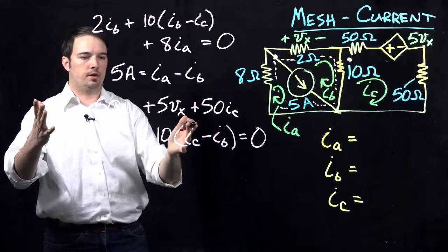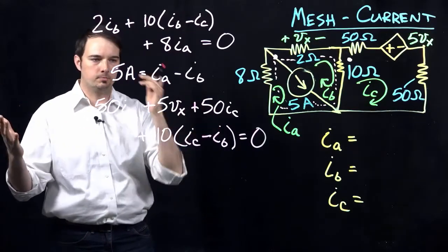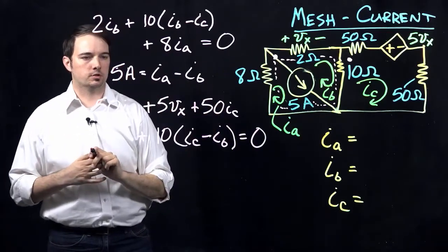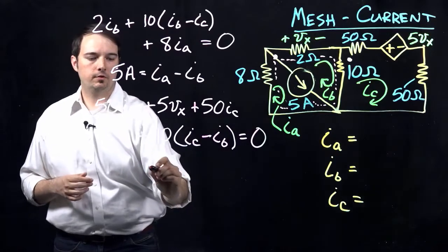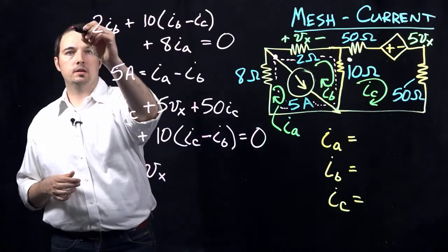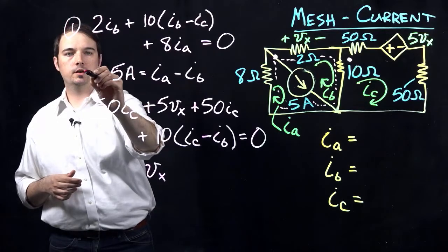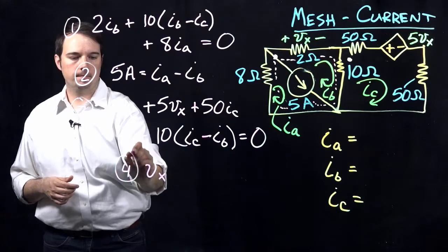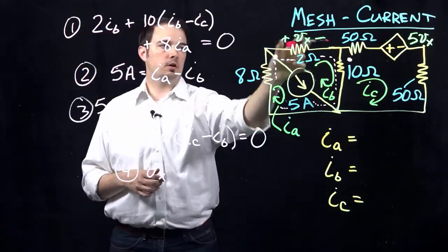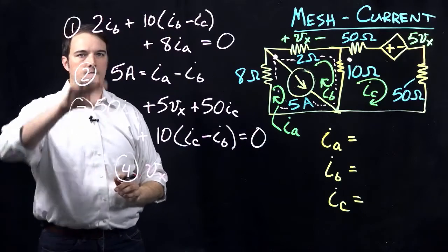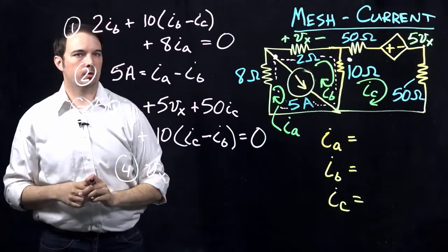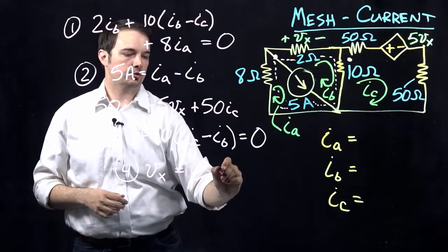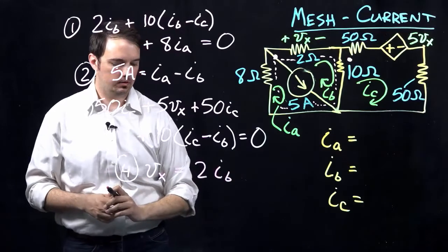I have a third equation, but now we've introduced a fourth variable due to this dependent voltage source. To get to the final solution, this is our fourth equation. VX, defined across this 2 ohm resistor, is just going to be equal to the value of that resistor 2 times IB.